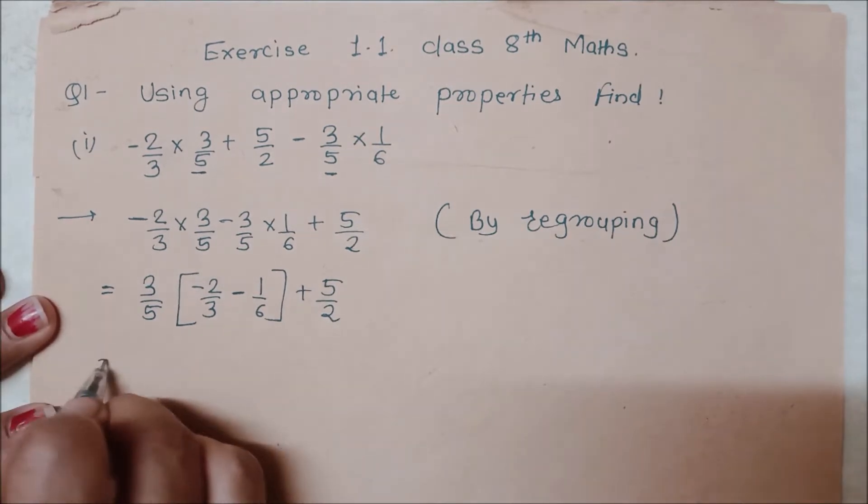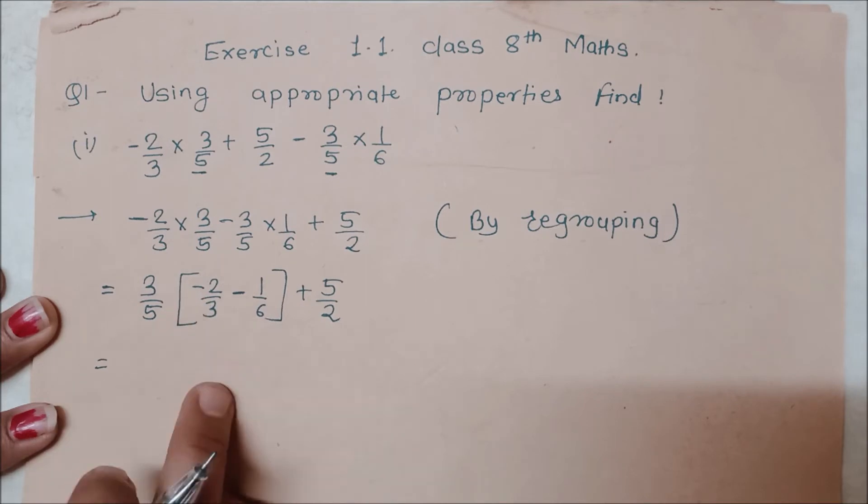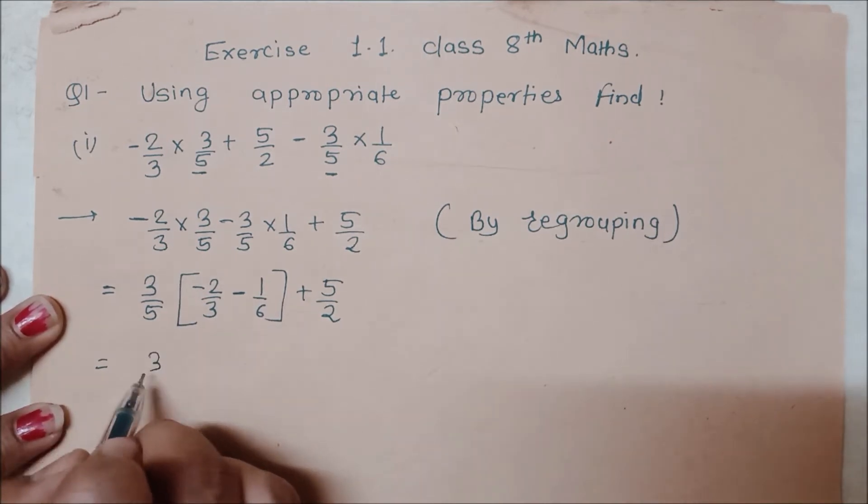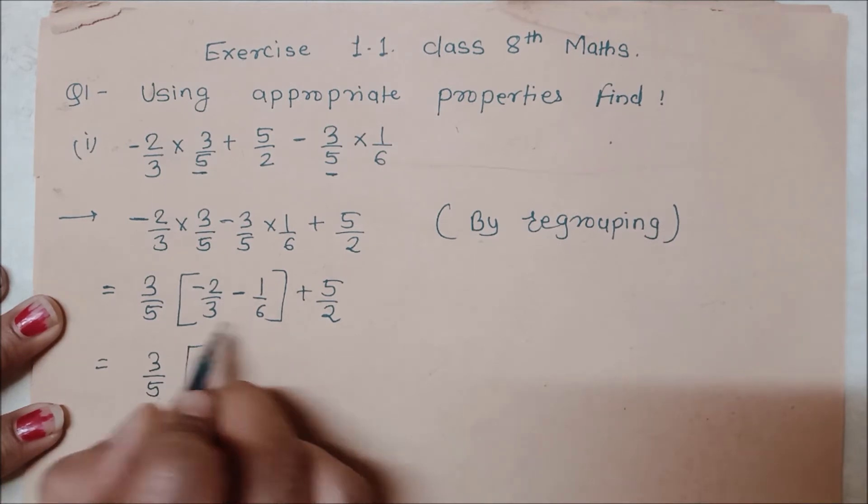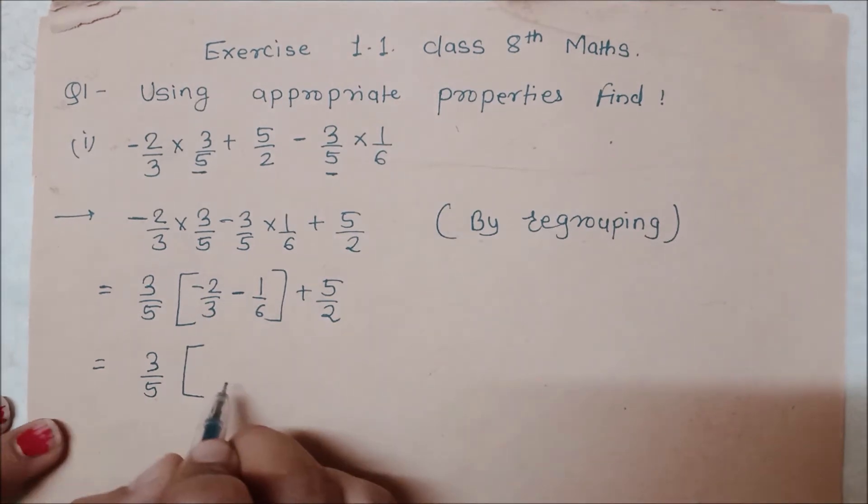Now, what will we do with this? 3 by 5 first, let's solve this bracket. We can solve this using the normal method. 3 by 5 will remain here. We can make LCM of 3 and 6. The LCM of 3 and 6 is 6. What do we do here?